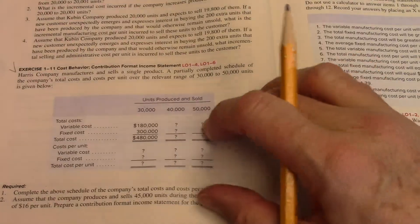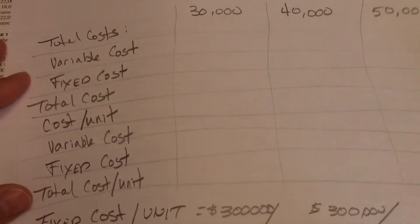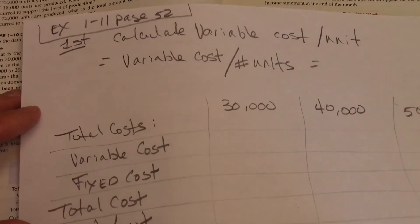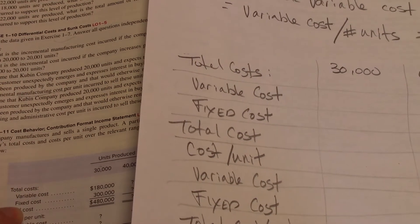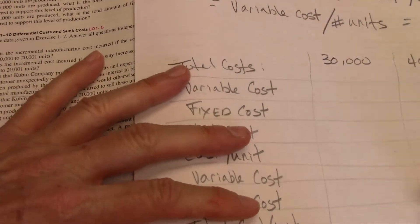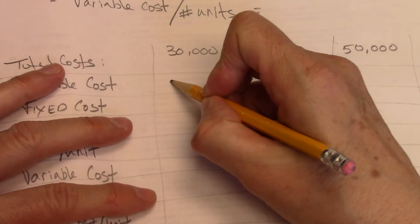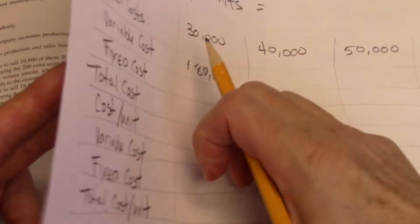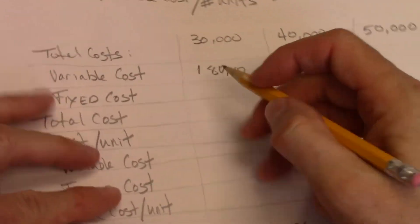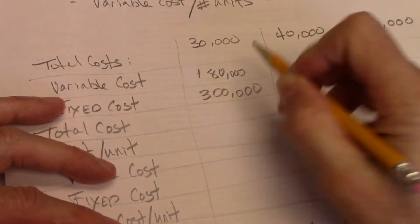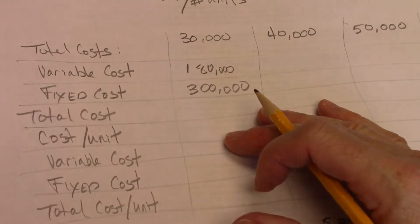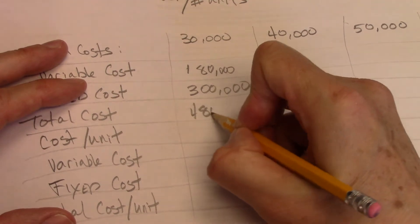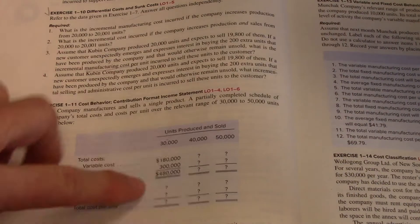Alright, so I've made myself a little table here already, so I don't have to do so much writing. So variable costs at $30,000 are $180,000. Fixed costs are $300,000. And so that makes my total cost here $480,000. Alright, so that's what they've given me, that's all I know.